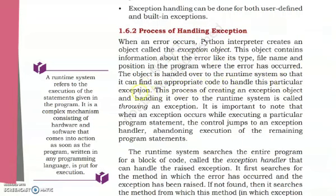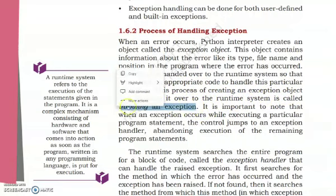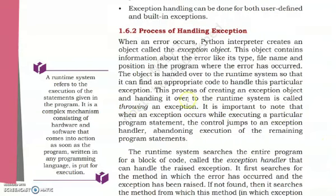The exception object is then handed over to the runtime system so that it can find an appropriate code to handle that particular exception. The process of creating an exception object and handing it over to the runtime system is called throwing an exception. In other words, throwing an exception is the process when an exception object is created and handed over to the runtime system for solving the error.